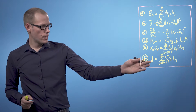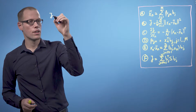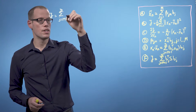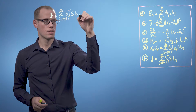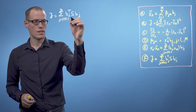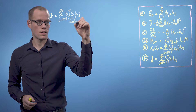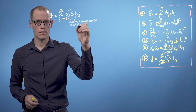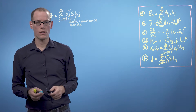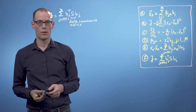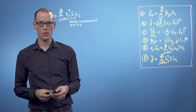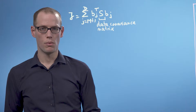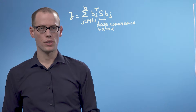Using the results from earlier, we can write our loss function as the sum j equals m plus 1 to d of bj transpose s times bj, where s is the data covariance matrix. Minimizing this objective requires us to find the orthonormal basis that spans the subspace we will ignore, and then take its orthogonal complement as the basis of the principal subspace. The orthogonal complement of a subspace u consists of all vectors in the original vector space that are orthogonal to every vector in u.